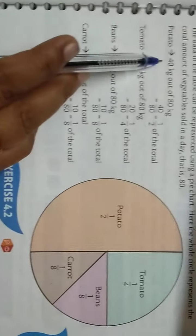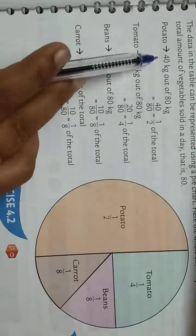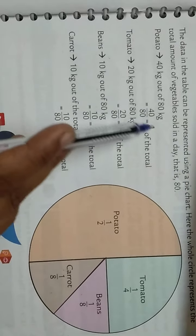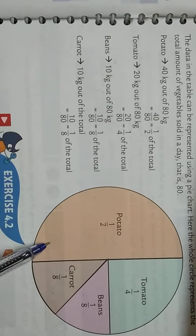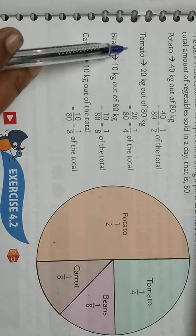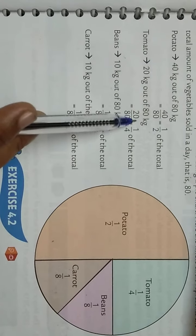Looking at the potato: total is 80 kg, 40 out of 80. This makes it a simple fraction of one half. That half portion represents potato. Tomato is 20 kg out of 80, which is 20 by 80 or 1 by 4.